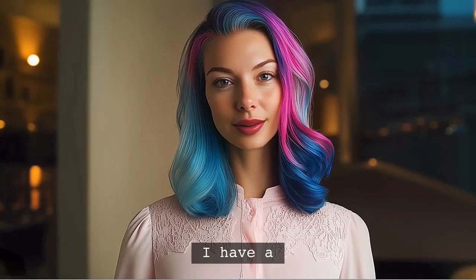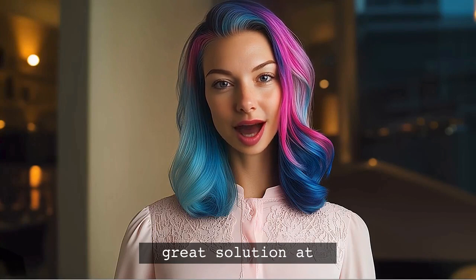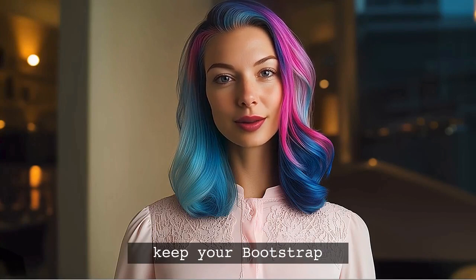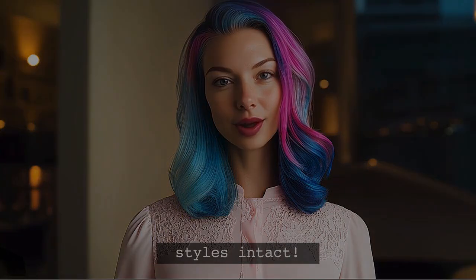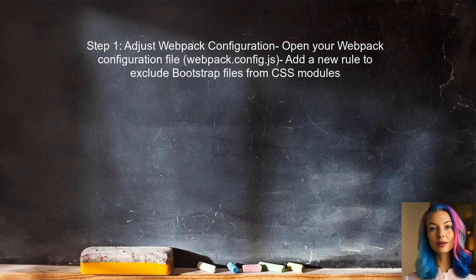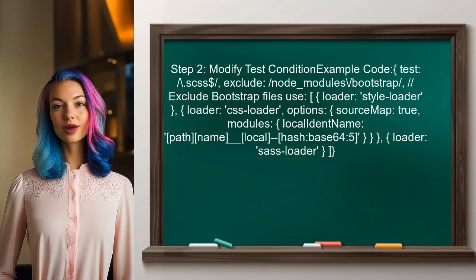I have a great solution that will help you keep your Bootstrap styles intact while using CSS modules. To exclude Bootstrap files from being processed by CSS modules, you need to adjust the configuration of the CSS loader in your project. This can be done by adding a specific rule to the Webpack configuration. You should modify the test condition for the CSS loader to exclude files from the Bootstrap directory.